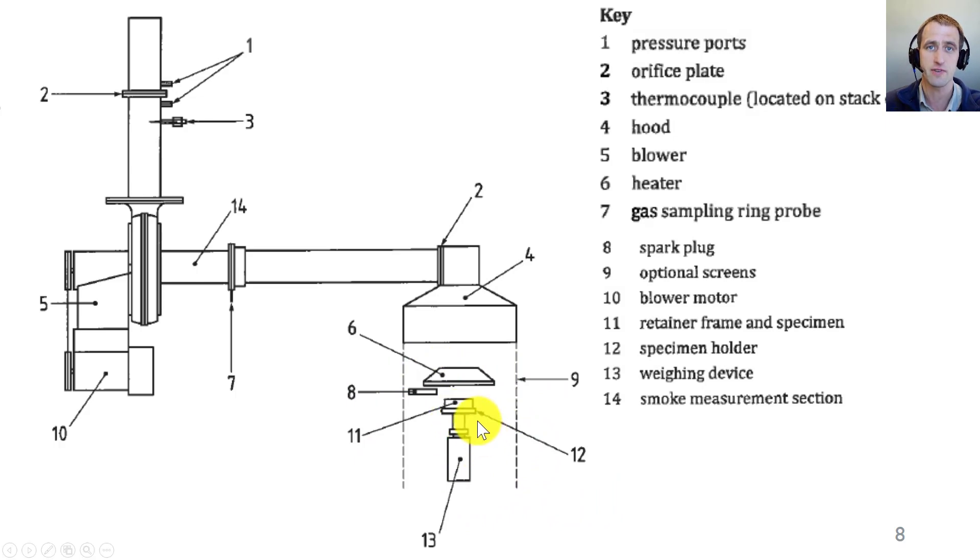This is the simple sketch of the setup. The main thing is you have a sample on a scale and we will measure the mass loss of that with time. But then also we have a cone that emits a flux onto our sample. The gases go up the cone into a hood, down a pipe, and then get forced out. There's forced extraction, there's a fan, and so we will measure the oxygen concentration with time. We can also measure other things—H2O, CO2, and CO—but the main thing is the oxygen concentration with time.